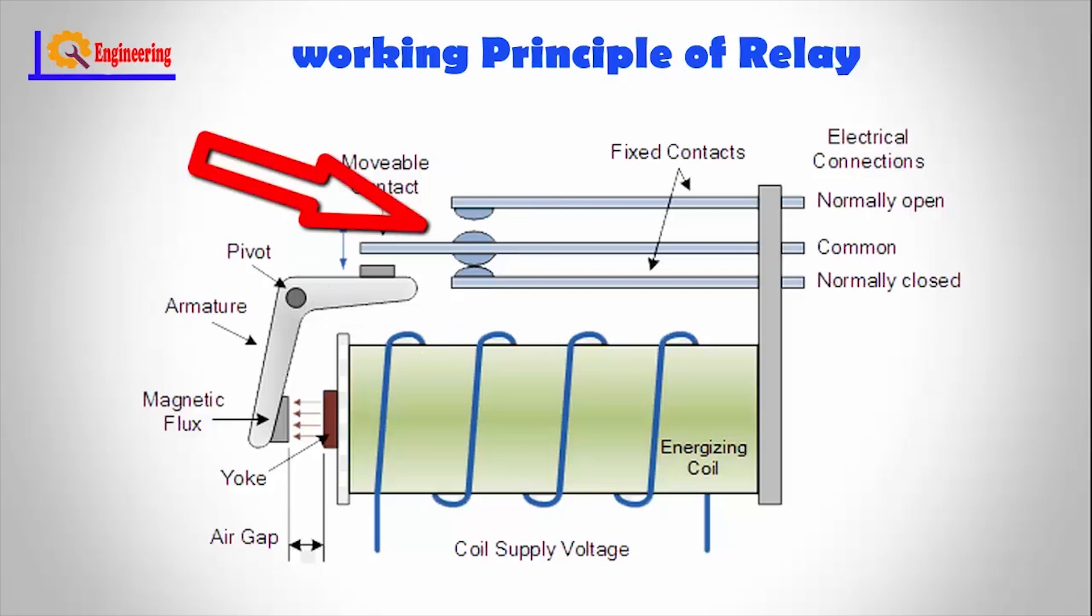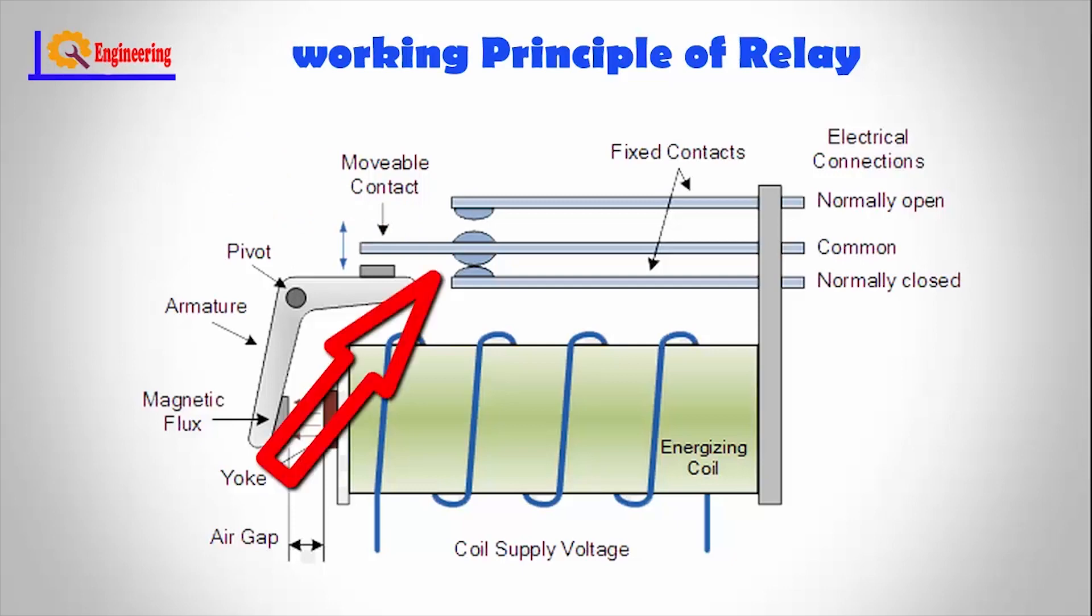This is an example of a normally open (NO) relay. The contacts in the second circuit are not connected by default and switch on only when a current flows through the magnet. Other relays are normally closed (NC).